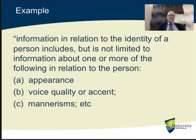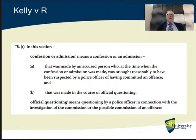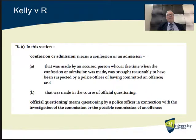One of the examples in the textbook uses the words: 'information in relation to the identity of a person includes but is not limited to,' et cetera. And here is the wording from Kelly v the Crown. You would have thought that was fairly straightforward, but the court felt that 'official questioning' — even though the word 'means' was used — was still open to further interpretation.